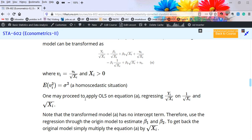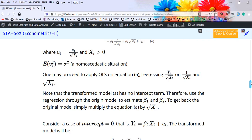One may proceed to apply OLS on the transformed model by regressing y_i over square root of X_i on one over square root of X_i and square root of X_i. Note that the transformed model has no intercept term.